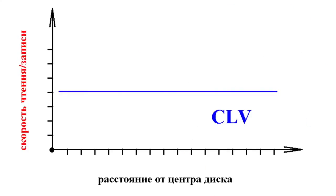So, under what standards does reading and writing of data on an optical disc happen? It's possible to identify two main standards. CLV — constant linear velocity. In this mode, the speed of data transmission is kept constant by changing the rotation speed of the disc.